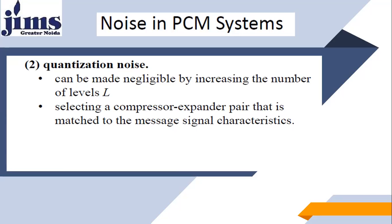The second noise source is quantization noise, which comes into the picture because of the step size chosen. For example, if your step size is 1 volt, then 1.6 volts is converted to 2 volts, giving an error of 0.4 volts. If you choose a step size of 2 volts, then 1.6 volts is approximated as 3 volts, giving an error of 1.4 volts. This quantization noise or quantization error actually depends upon the number of levels taken.